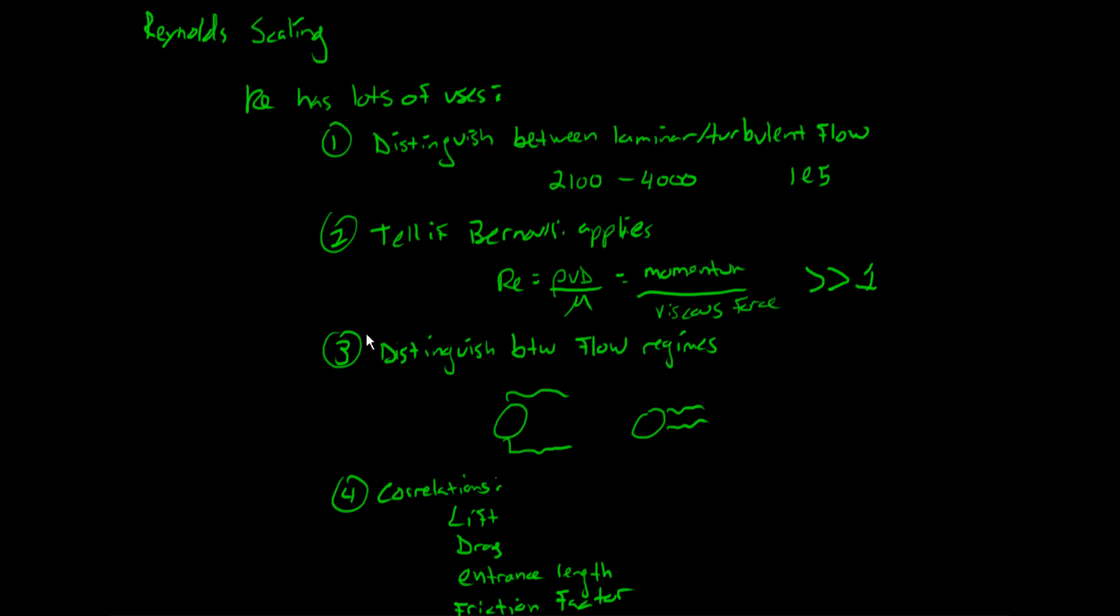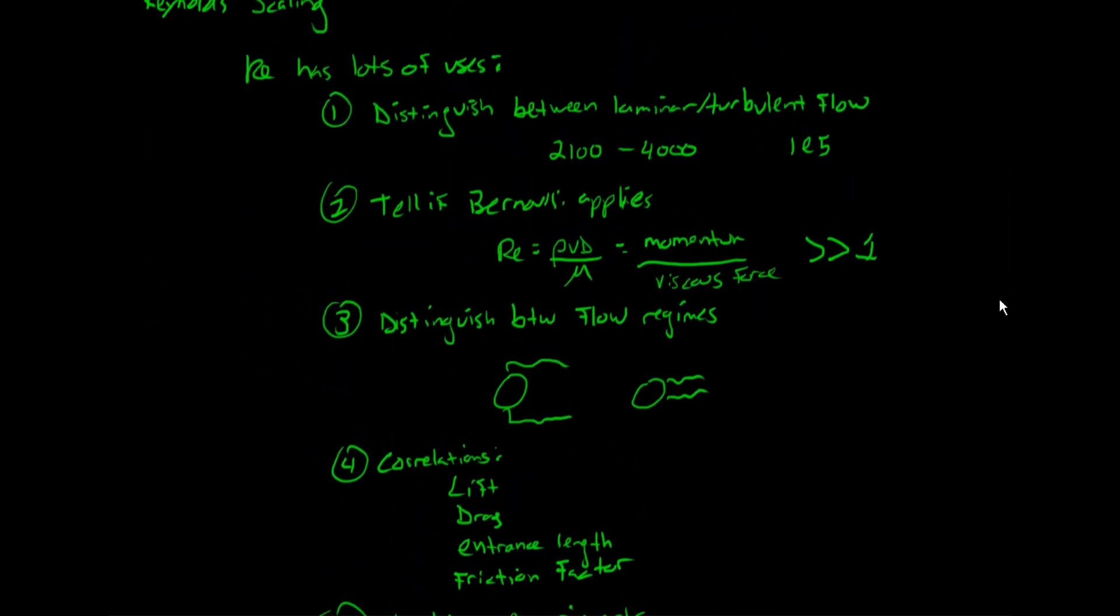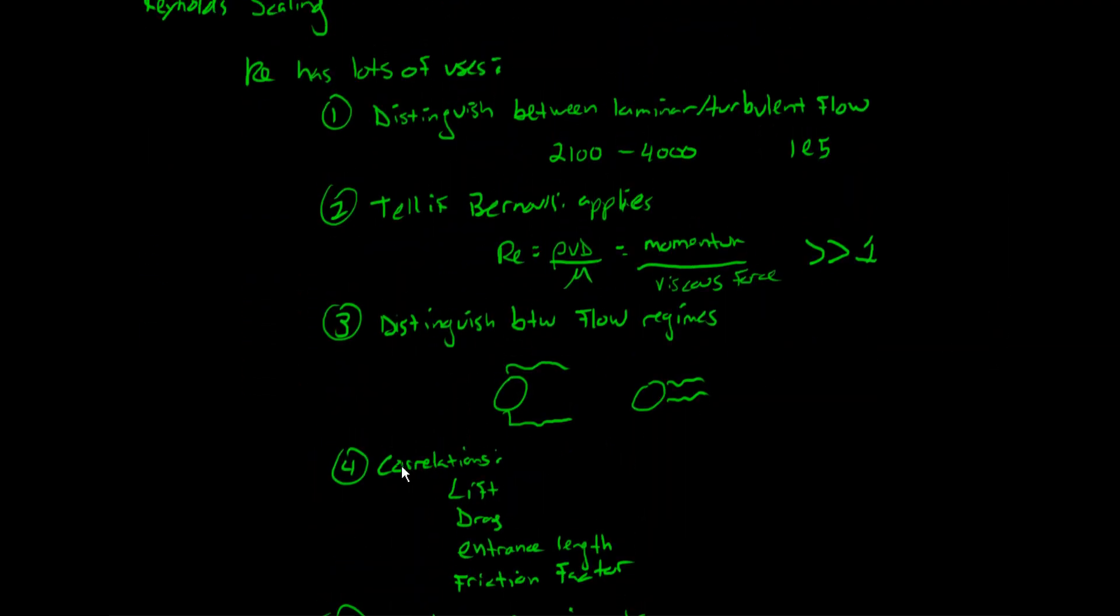We also saw that you could use it to distinguish between flow regimes. For example, we talked about a golf ball and how it separates at two different locations depending on whether it's laminar or turbulent. And then lastly, we talked about using correlations—things like lift, drag, entrance length, friction factor—these are all things that we tend to graph as a function of Reynolds number.